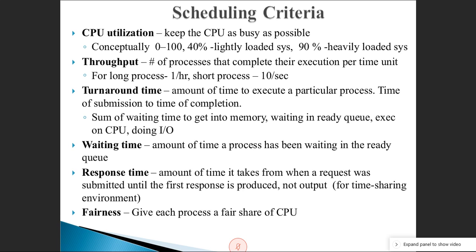The time duration between submission and completion is your turnaround time. The next criterion is waiting time — the amount of time a process has been waiting in the ready queue. Processes are selected from the ready queue one by one, so the amount of time a process spends waiting there is its waiting time.